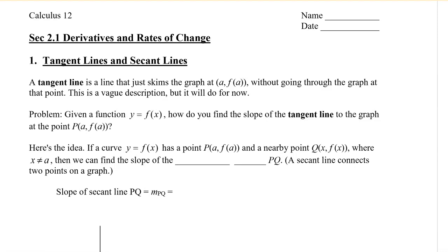A tangent line is a line that just skims the graph at a point a, f of a, without going through the graph at that point. Now, this is a vague description, but it'll do for what we want now.